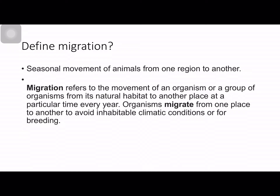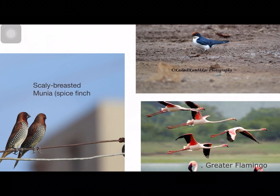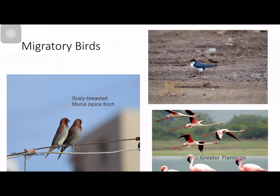Migration can be defined as the seasonal movement of animals from one region to another, or as the movement of an organism or a group from its natural habitat to another place at a particular time every year. Animals migrate because they need favorable climatic conditions and suitable places for breeding.